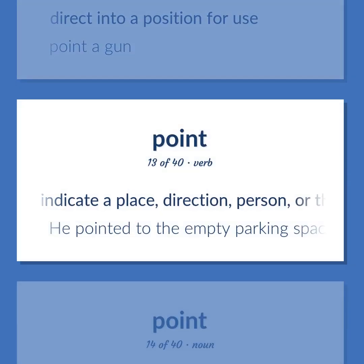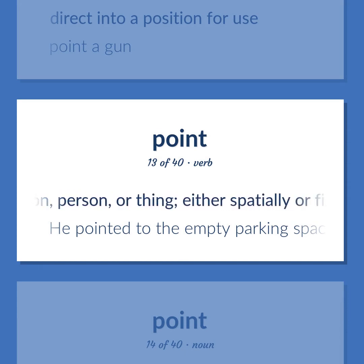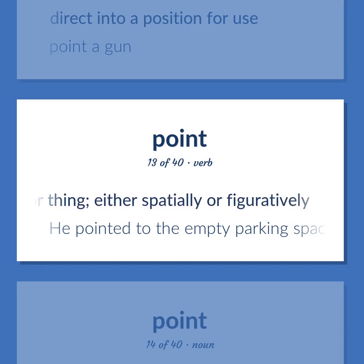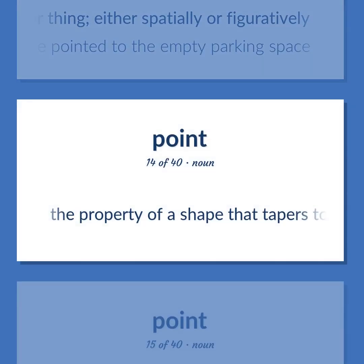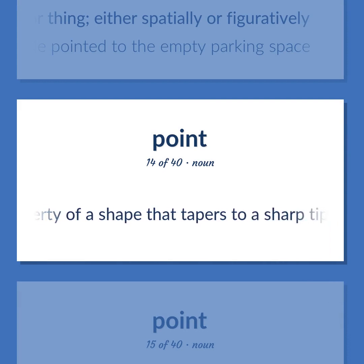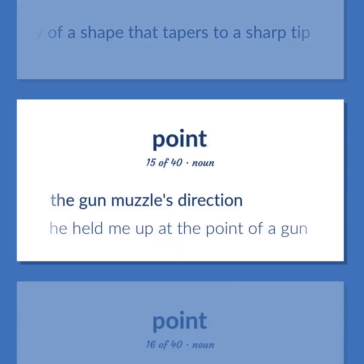Point: Indicate a place, direction, person, or thing, either spatially or figuratively. Example: He pointed to the empty parking space. The property of a shape that tapers to a sharp tip. The gun muzzle's direction. Example: He held me up at the point of a gun.